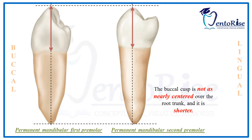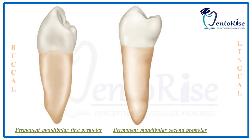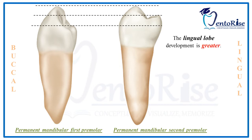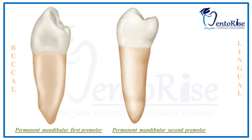Please observe the figure very carefully. Coming to the third heading, the lingual cusp — as very obvious in the figure, the lingual cusp development in a permanent mandibular second premolar is greater than that of the first premolar. Since the lingual lobe development is greater in the permanent mandibular second premolar, less of the occlusal surface is seen in this tooth compared to that of the first premolar.